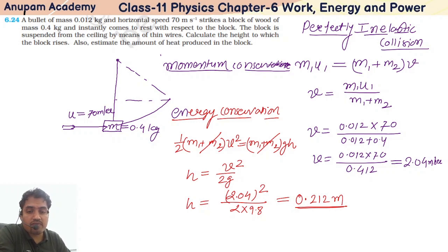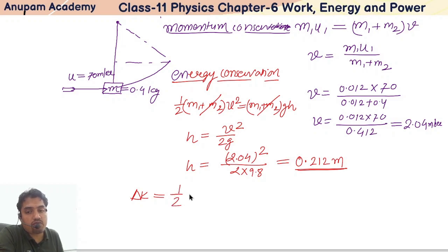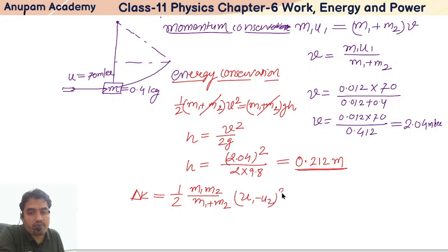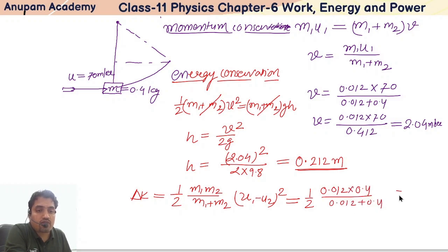Now for the last part — estimate the amount of heat produced. In a perfectly inelastic collision, the loss of kinetic energy is given by: ΔKE = (1/2) × (M1 × M2) / (M1 + M2) × (U1 − U2)². We can also compute it directly as initial KE minus final KE. So: (1/2) × (0.012 × 0.4) / (0.012 + 0.4) × (70 − 0)².